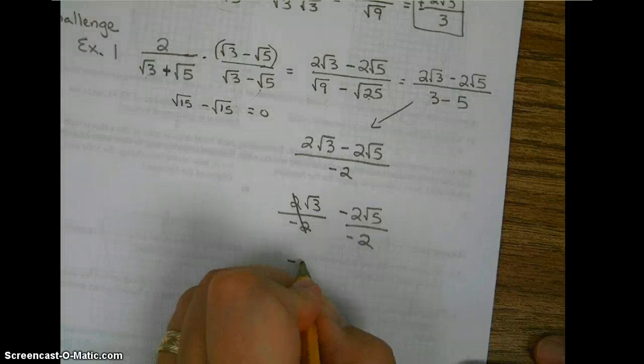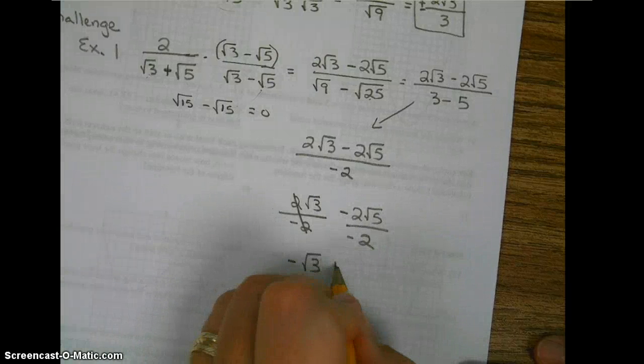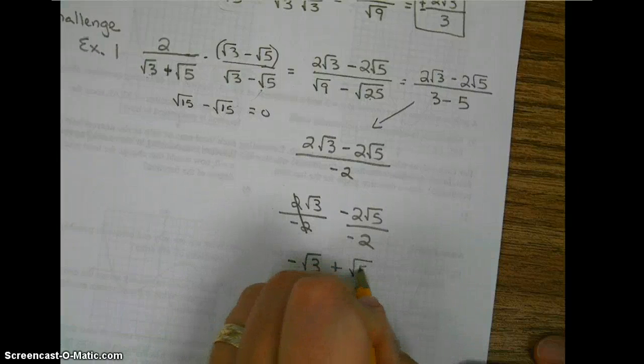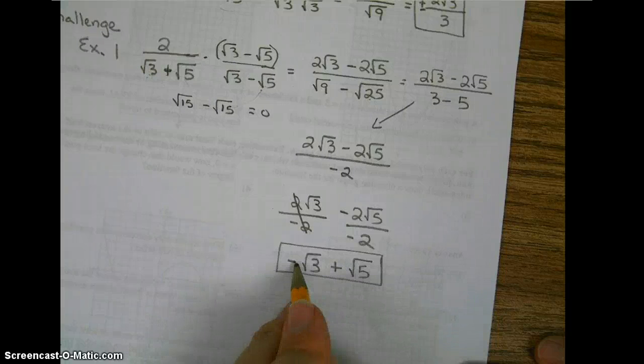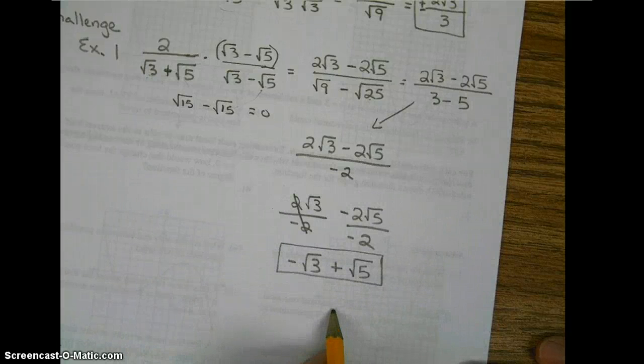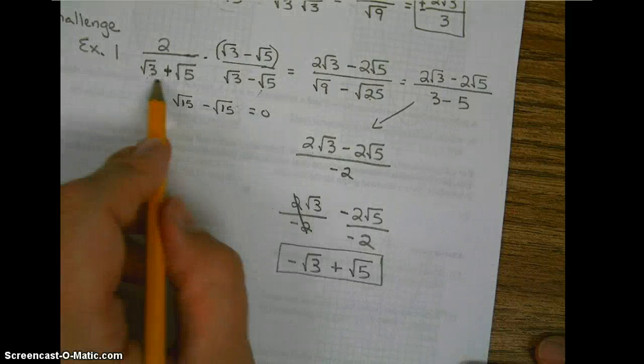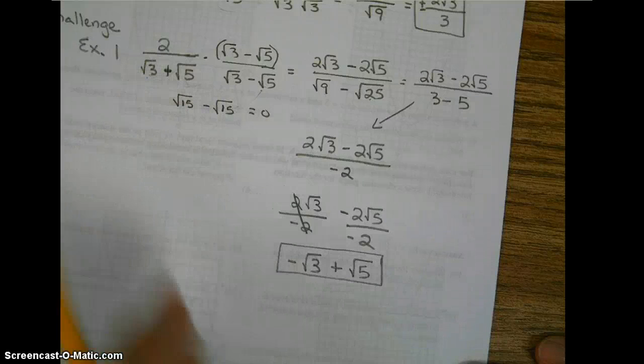leaving us with negative square root of 3. Those cancel, leaving us with positive square root of 5. And this is in the numerator. If I was to make a denominator, it would be 1. And so we got rid of the square roots in the denominator. See you later.